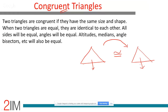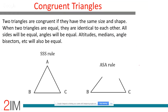How do you establish congruence? There are four methods — four methods only. The first is the SSS rule: Side-Side-Side. If three sides of one triangle are equal to three sides of another triangle, then the two triangles are congruent. Once you establish congruence, every other extrapolation is built in — everything will be identical between the two triangles.